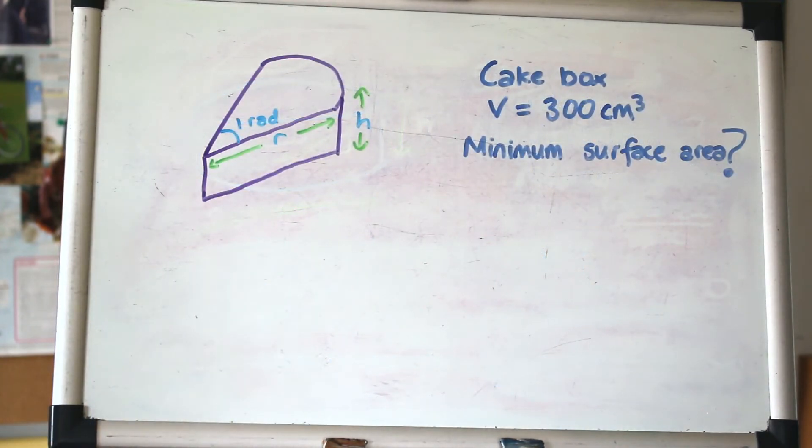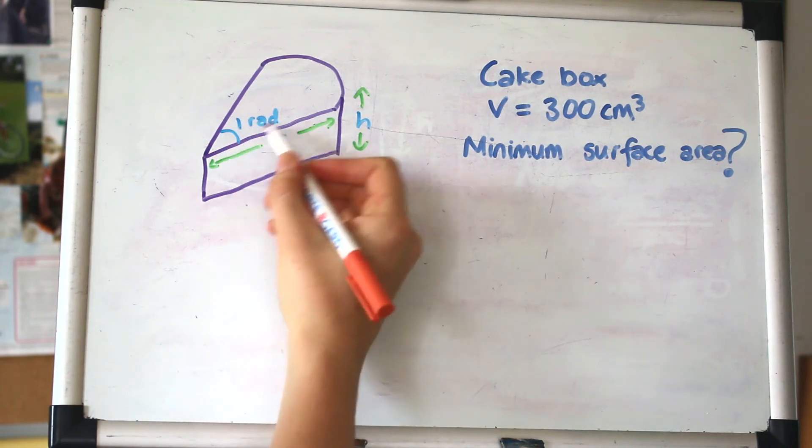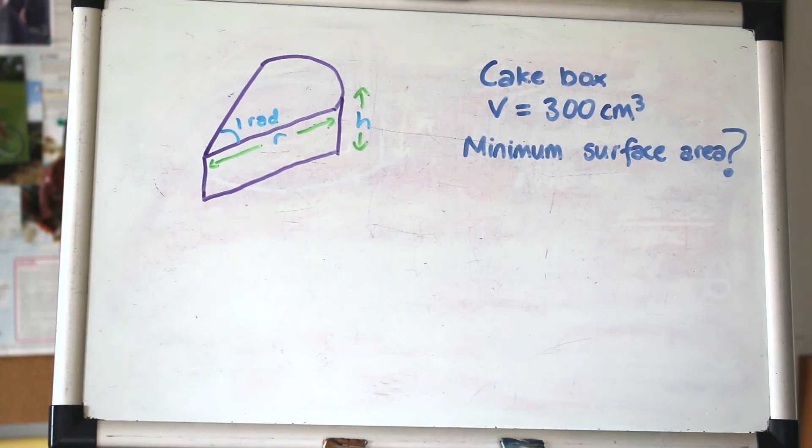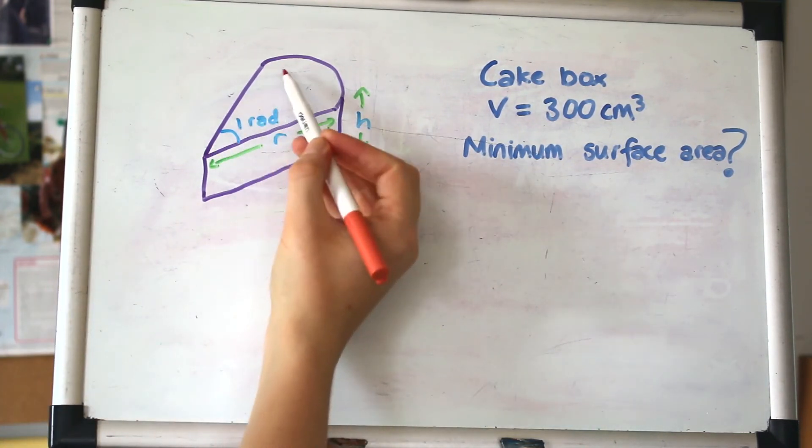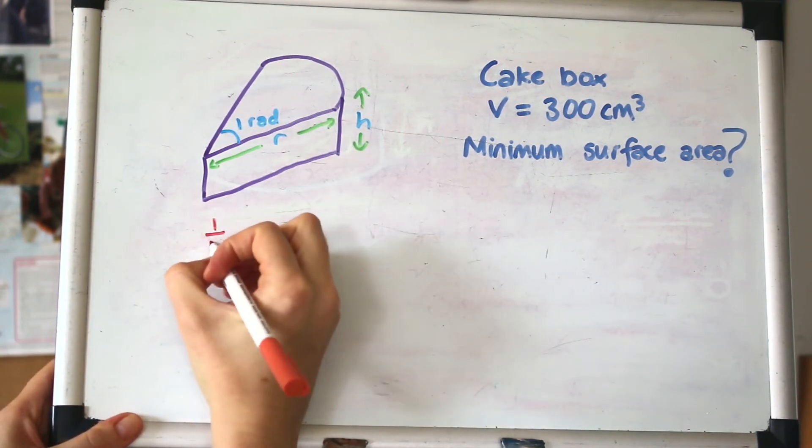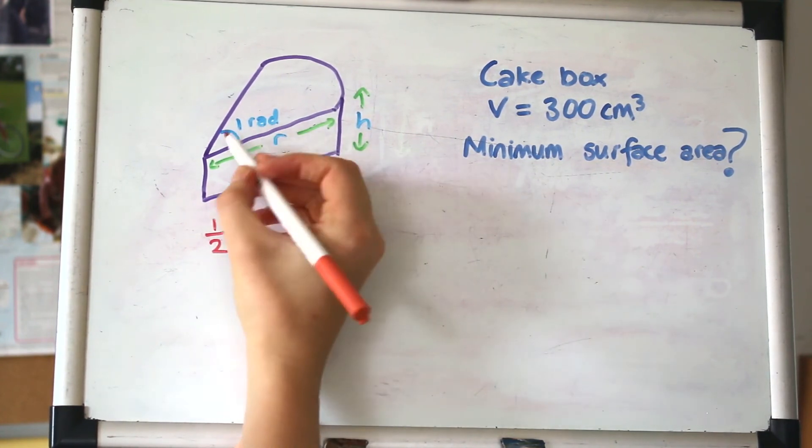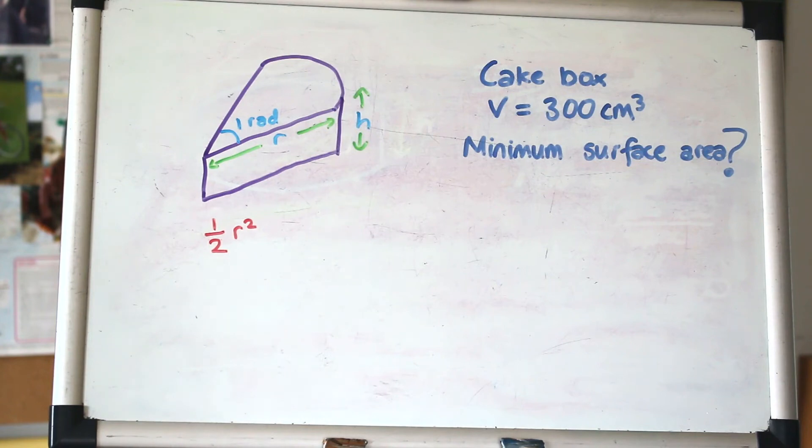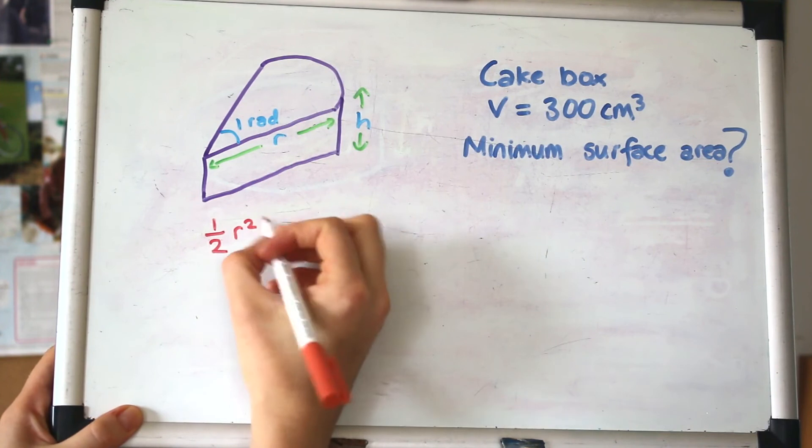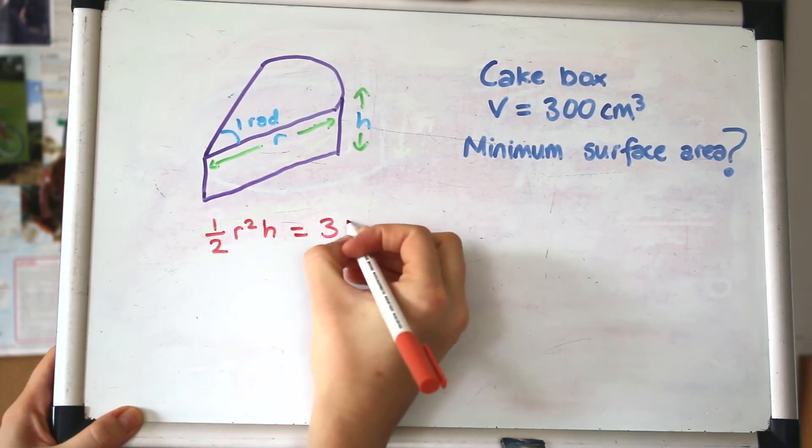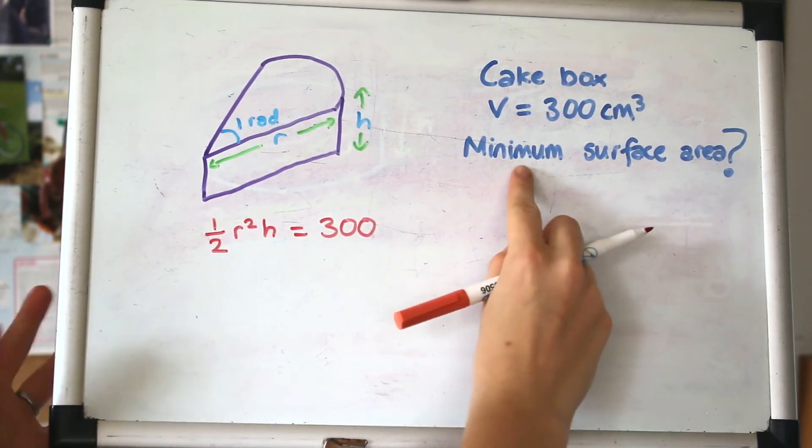Last question is about a cake box, which is a bit more happy. It's the same process as ever. We're given a volume, we're asked to minimize the surface area, so we can make an equation for the volume and an expression for the surface area and differentiate it. This time we've got a shape that involves a sector of a circle, so hopefully you're aware of sector work with radians.